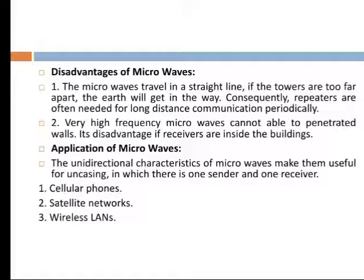Applications of microwave: The unidirectional characteristics of microwaves make them useful for unicasting, in which there is one sender and one receiver. Applications include cellular phones, satellite networks, and wireless LAN.